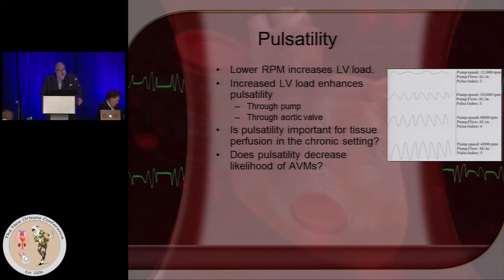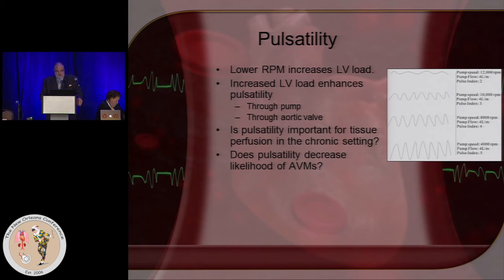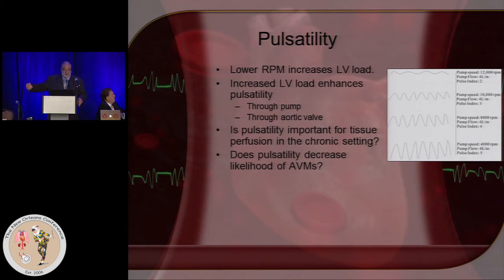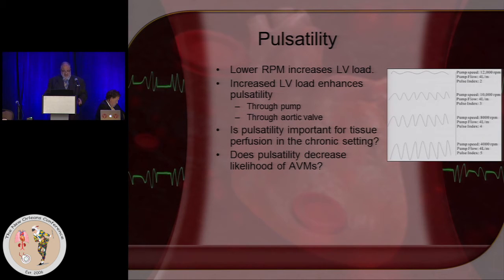Pulsatility: if you lower the RPM, we fill the ventricle more, and the increased LV load usually enhances pulsatility — both through the pump itself as the relative pressure of the LV and aorta changes, and also through the aortic valve with more blood flow through it. This relationship of increased pulsatility depends heavily on your LV systolic characteristics. There's a difference between poor LV function and very, very poor LV function. Some patients have such low LV contractility that the ventricle barely does anything — there's barely any pulsatility and it can't open the aortic valve no matter what you do.